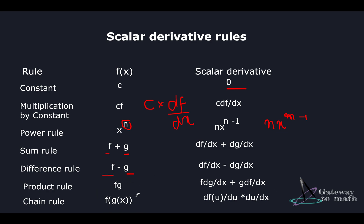The chain rule is again an interesting case. We replace the inner function with a new variable — for example, replace g(x) with u. This expression becomes f(u), and now we differentiate f(u) with respect to du, then multiply by du differentiated with respect to dx separately. The du terms cancel and we get the original expression back.